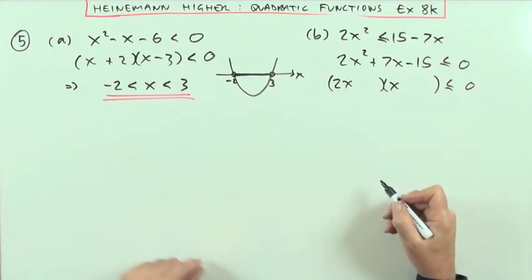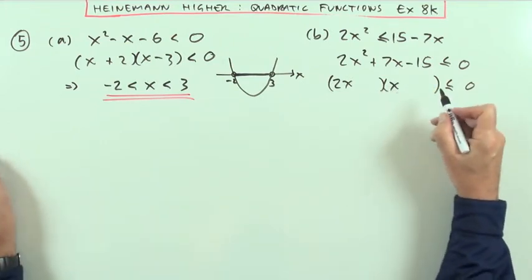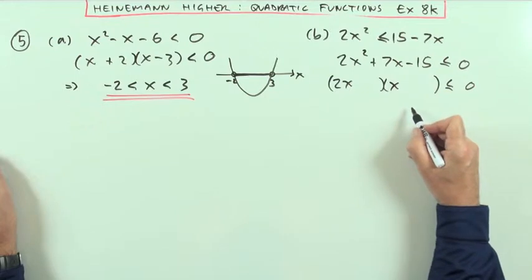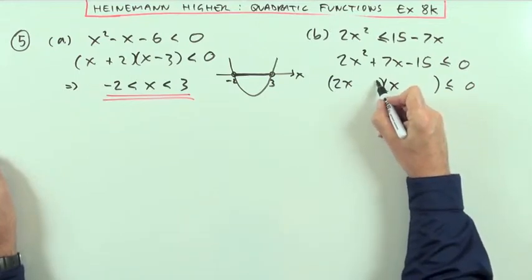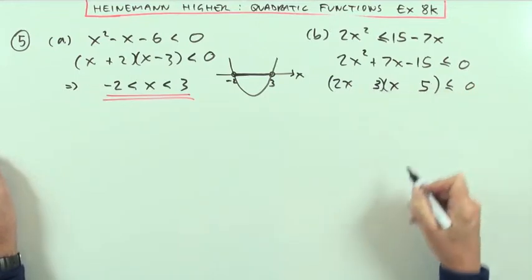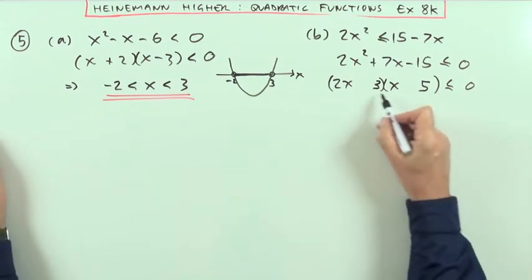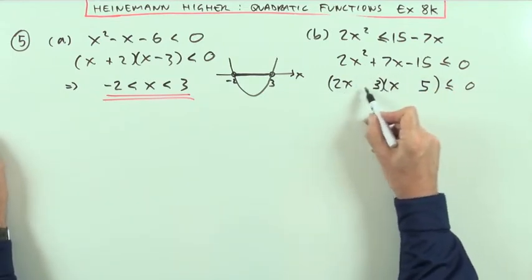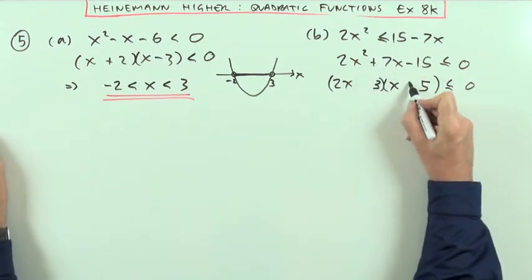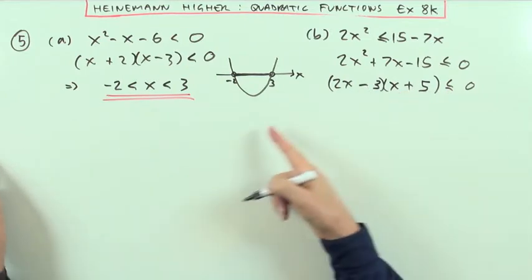That's 2x times x, and it's going to be 3 and 5, so I'll have to put the 3 here and the 5 there. And then I've got opposite signs, so the plus will go to the larger, which is that, and the minus will go there.